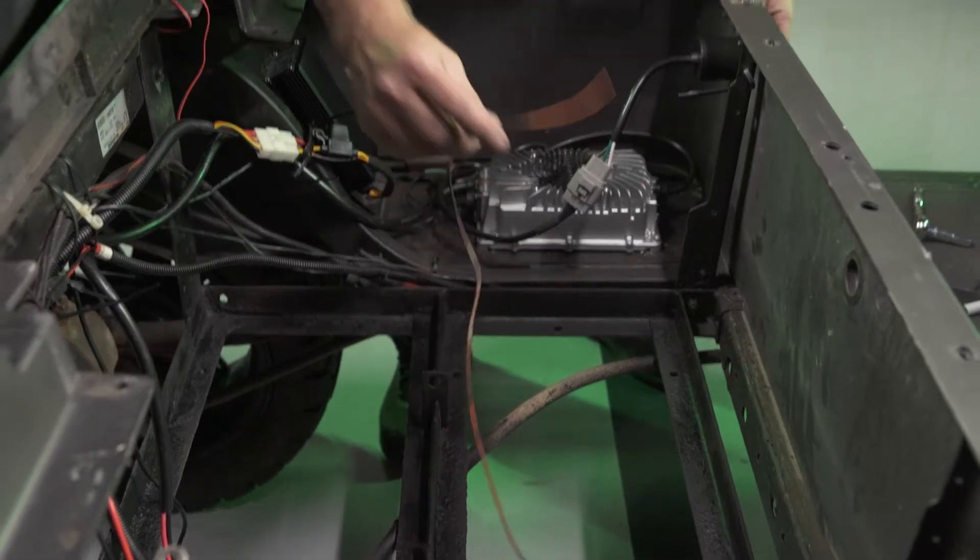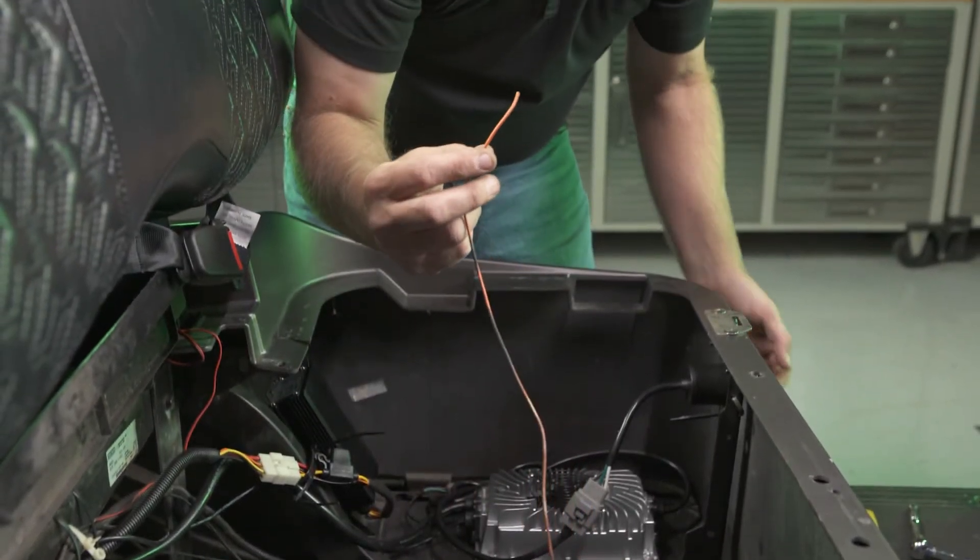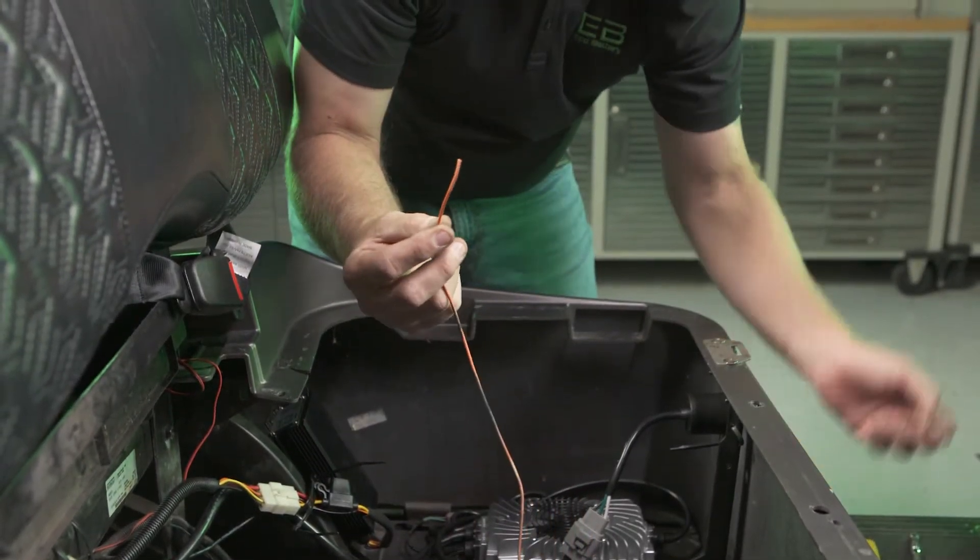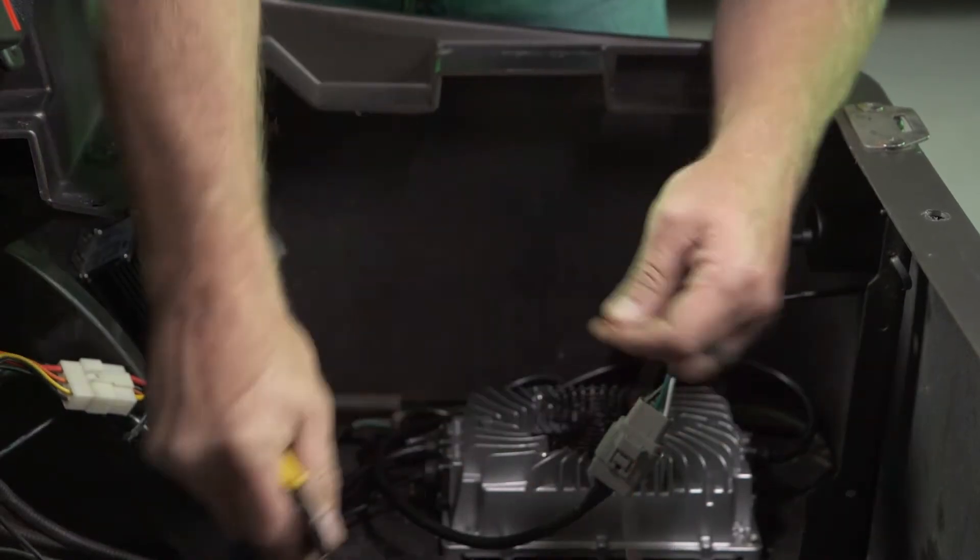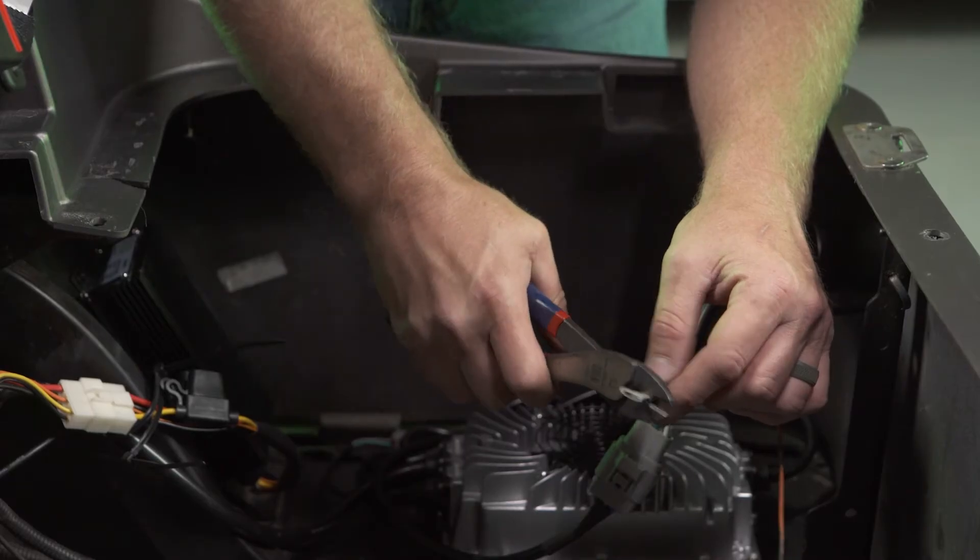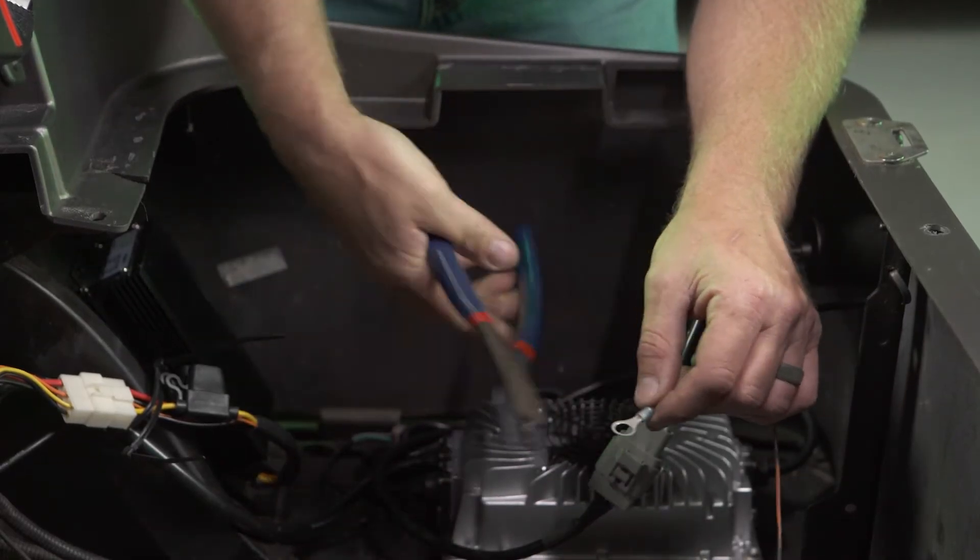Locate the drive-off safety wire previously removed from the stock charging port. This wire needs constant power in order for the controller to function. We suggest installing a 5-sixteenths ring terminal on the end of the wire and connecting it to the positive terminal of the battery.